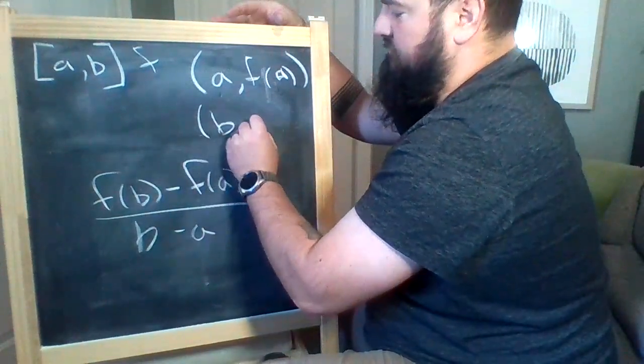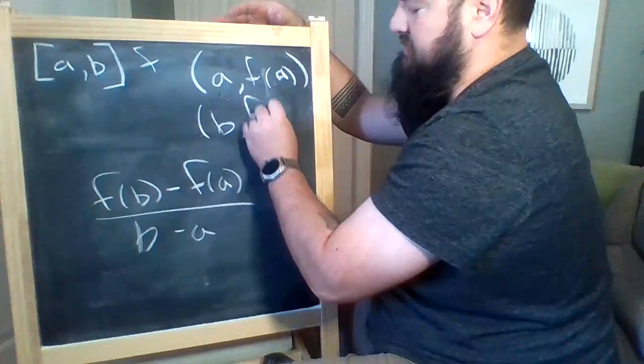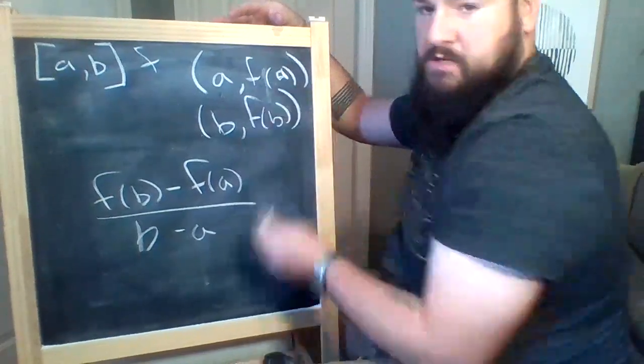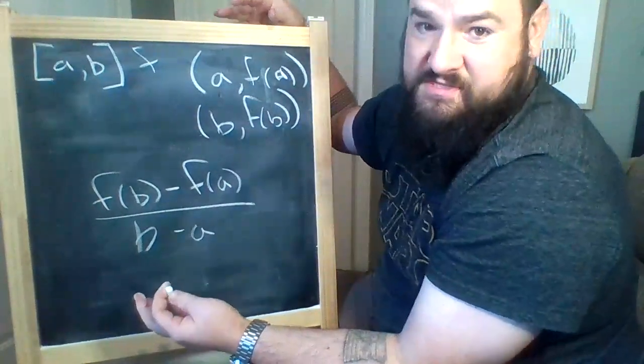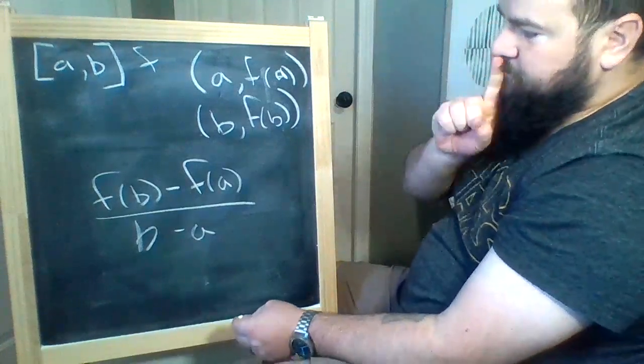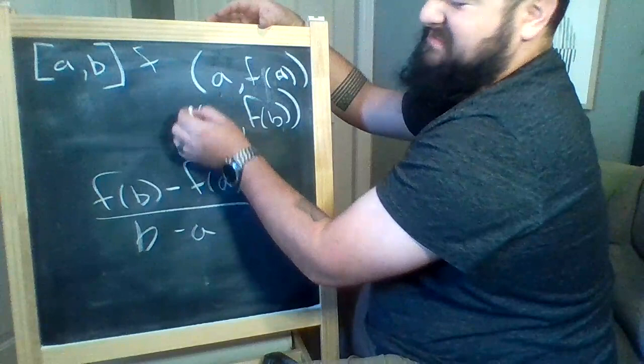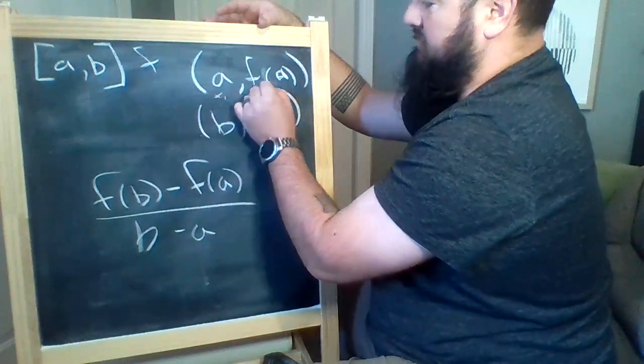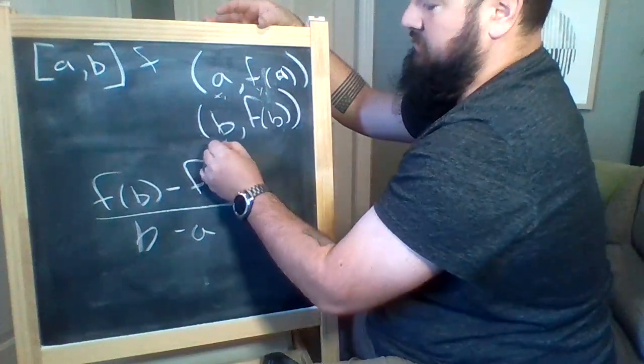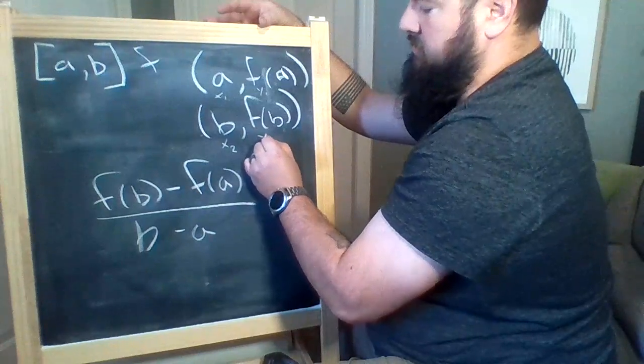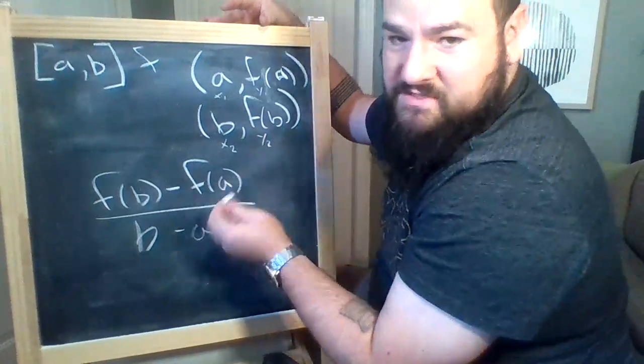I can do an exactly similar thing for b. So if the input's b, the output is f(b). It's super easy. Now, let me label these in a different way. So this is x₁, y₁, x₂, y₂. You probably see where I'm going with this.